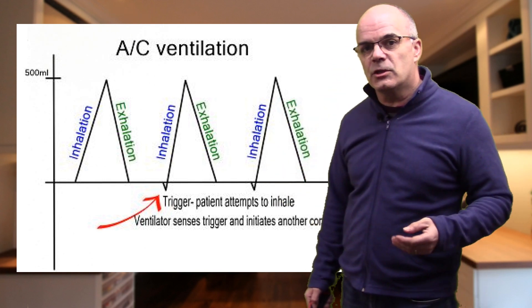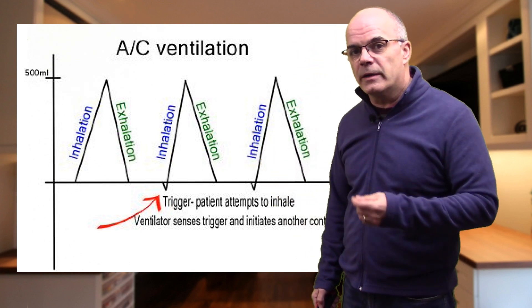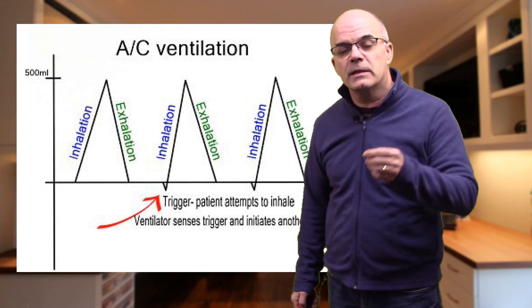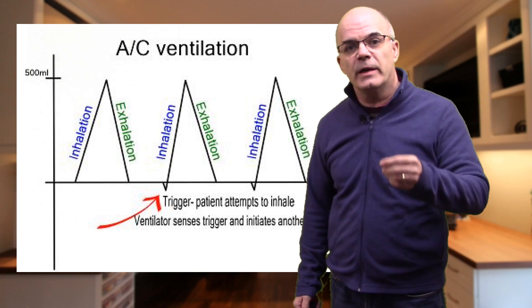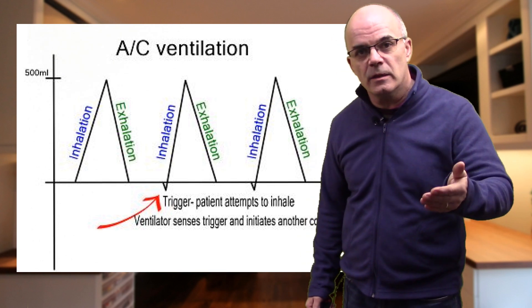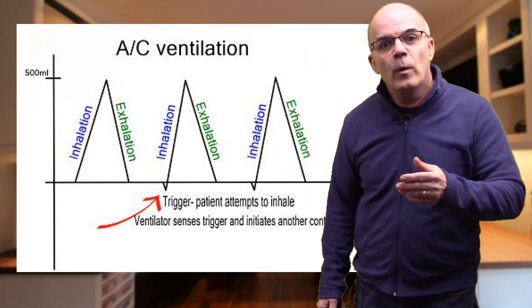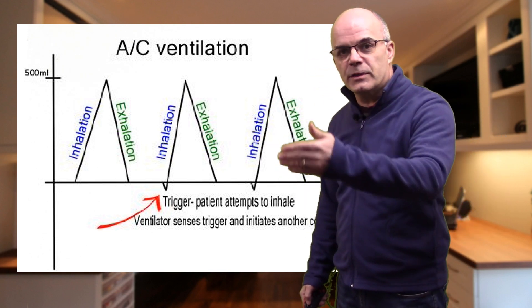The next breath is initiated by the patient. You can see the small negative flow generated by the patient. This trigger can be set to make it easier or harder for the patient to trigger their own breath, and this is often done as you start to wean the patient. The machine is set to detect this trigger and when it does, it will deliver the set volume.